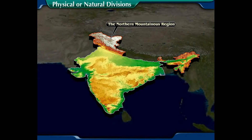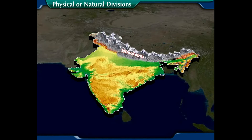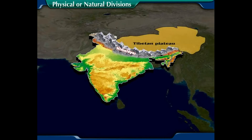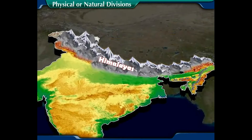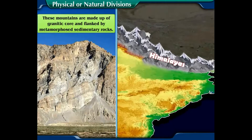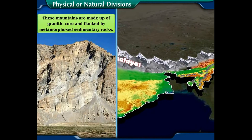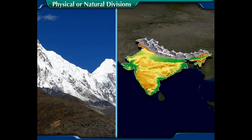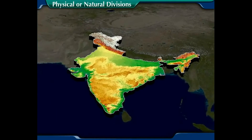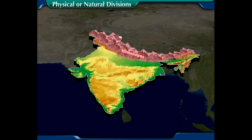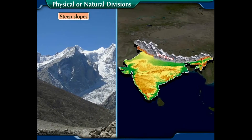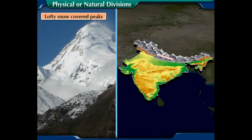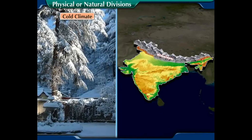The northern mountainous region: The Himalayas separate the Indian subcontinent from the Tibetan plateau. They are one of the youngest, most folded mountain ranges, with the highest topographic relief in the world. These mountains are made up of a granitic core and flanked by metamorphosed sedimentary rocks, with very uneven topography and a very complex geological structure. Characteristics include: A) steep slopes, B) lofty snow-covered peaks, and C) cold climate.